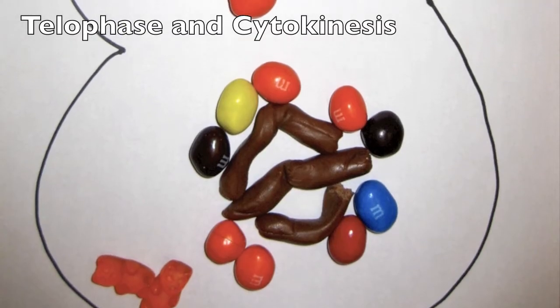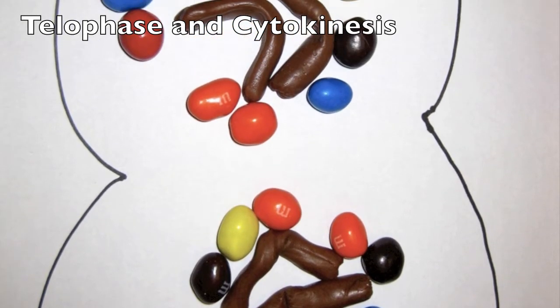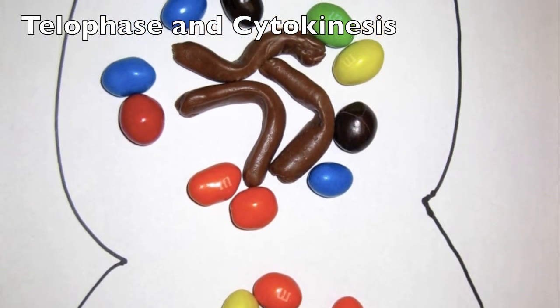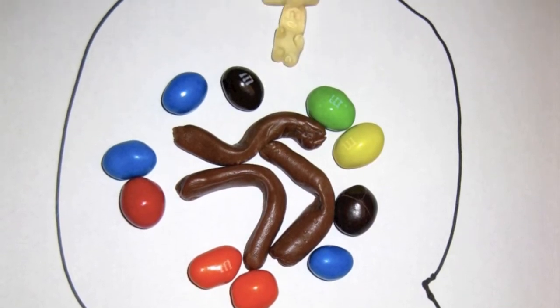The last phase of mitosis is telophase. Fragments of the nuclear envelope begin to form two genetically identical nuclei.